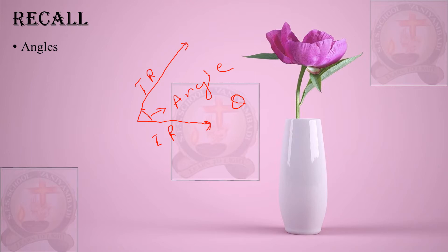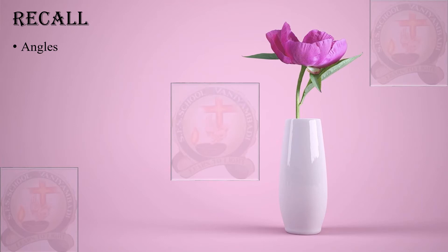An angle is the distance between the initial ray and the terminal ray, and we measure it using theta (θ), represented in degrees. If you rotate the ray clockwise, you get negative angles; if you rotate anti-clockwise, you get positive angles. Based on the measurement, we classify angles into different types.